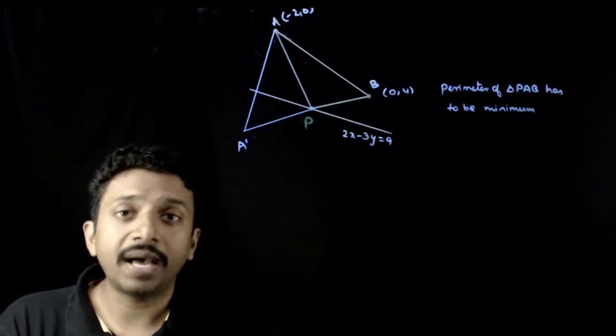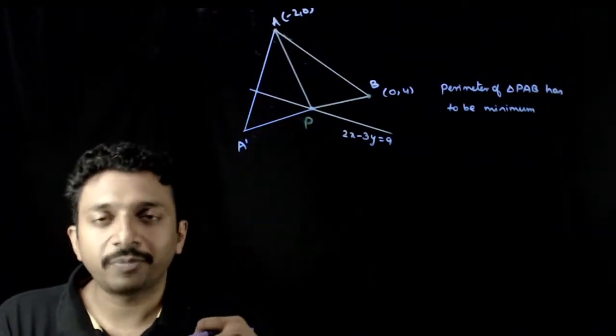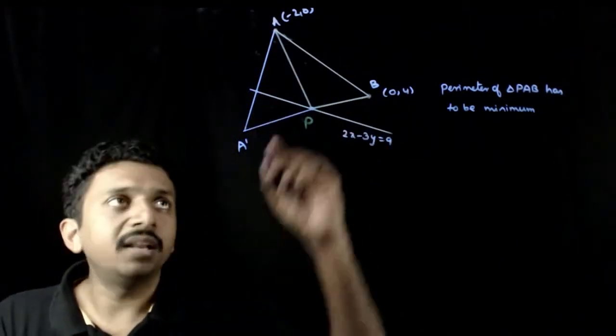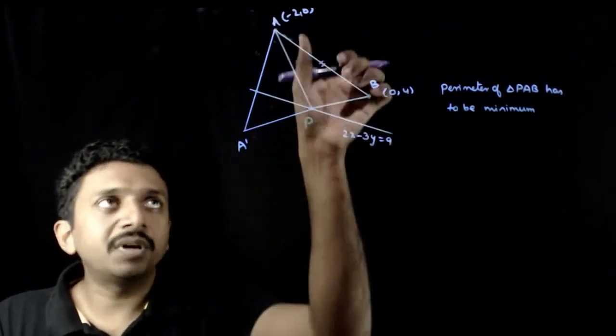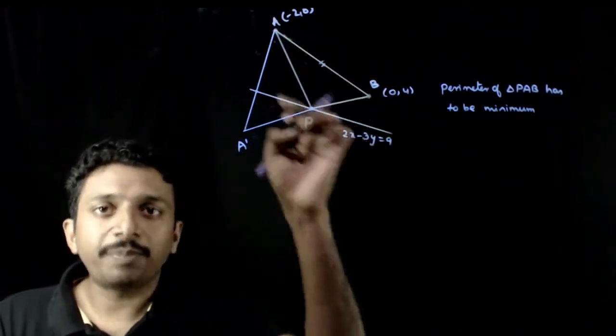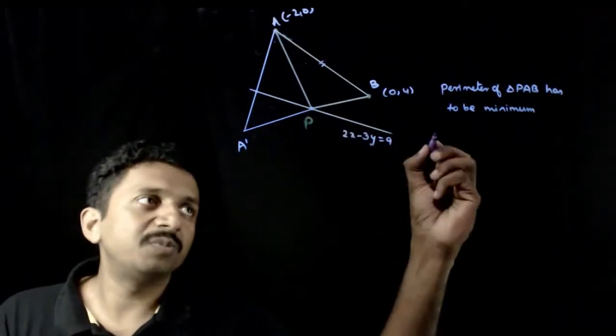What is the theory? Whenever you have questions like this, these questions are based on the property of reflection. If you take triangle PAB, AB is always constant because A and B are fixed. So for the perimeter of triangle PAB to be minimum, PA plus PB has to be minimum.